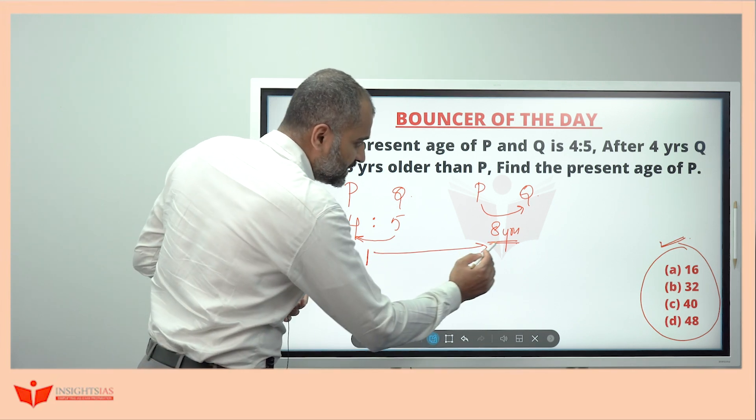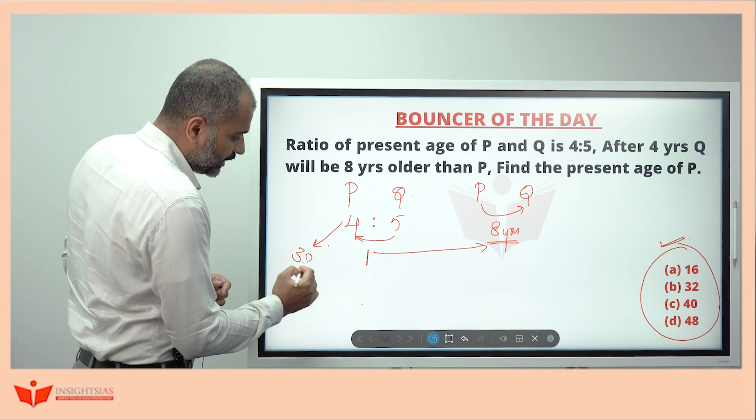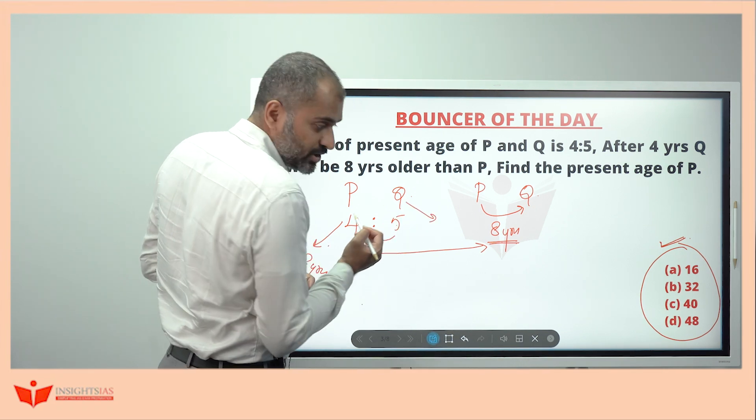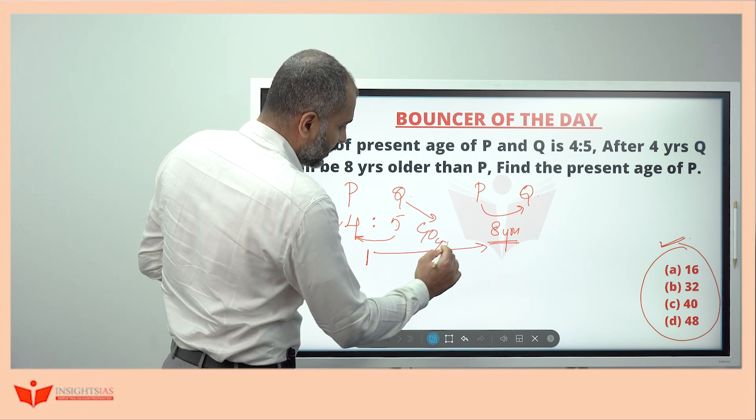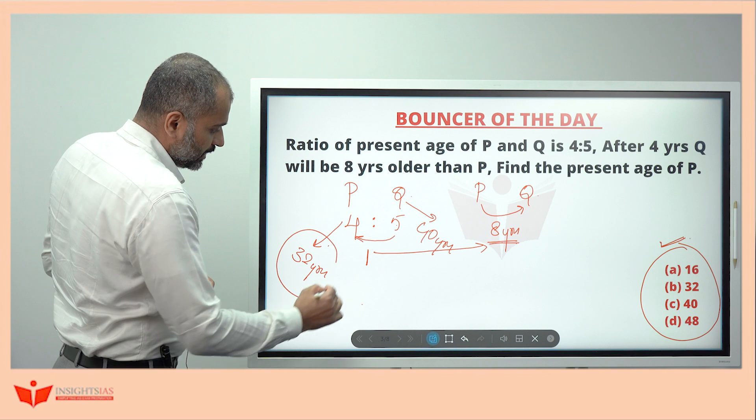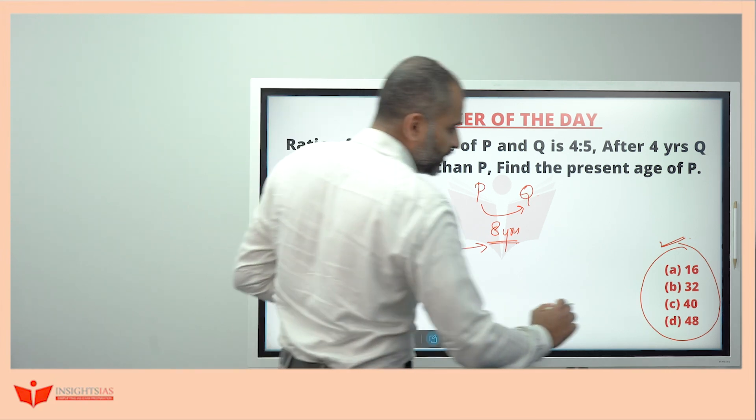If 1 part is equal to 8 years, P is 4 parts, that is equal to 32 years and Q is 5 parts. His age is 5 parts or else 8 years older. So it has to be 40 years. And P's age, he is asking, hence 32 years.